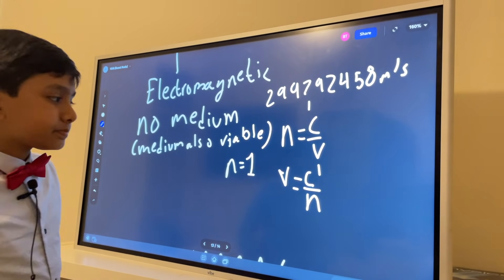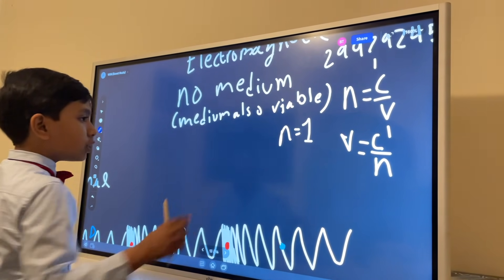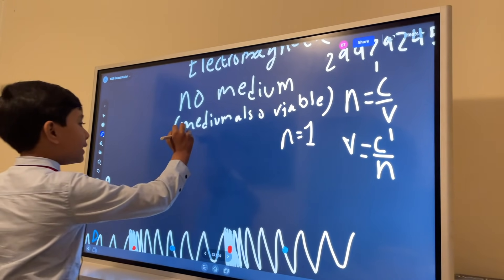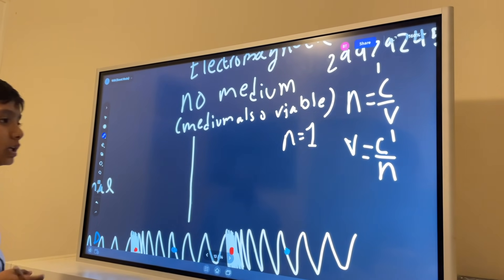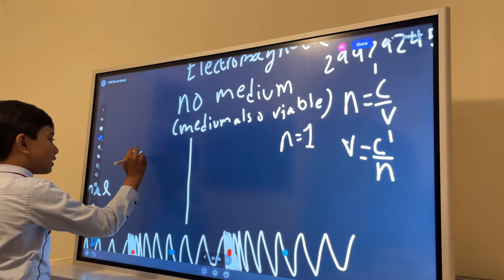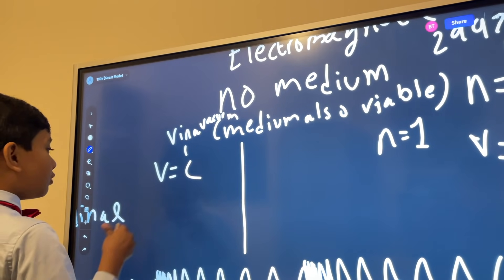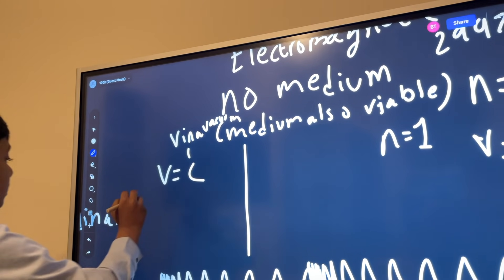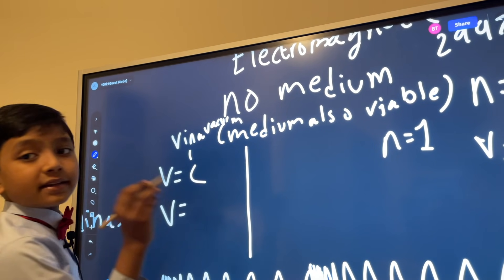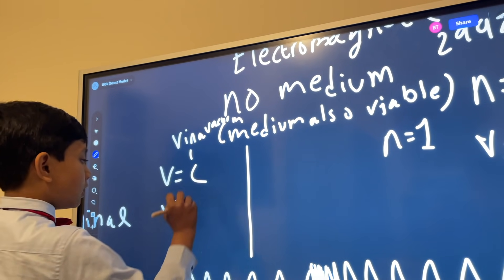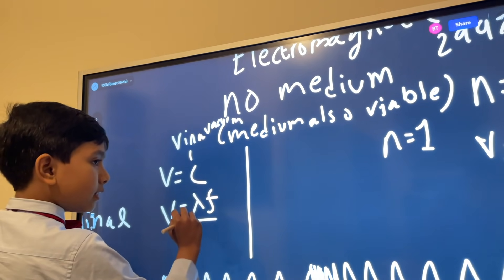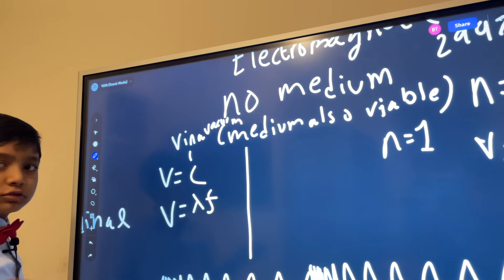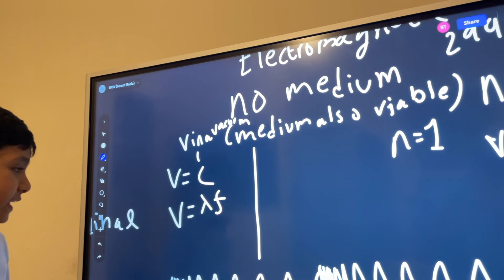So let's look at an example with medium and without a medium. Without a medium, V is just going to be equal to C. Let's go a little more in depth. C is lambda times F, and N. So now N goes to 1, of course we don't need it.